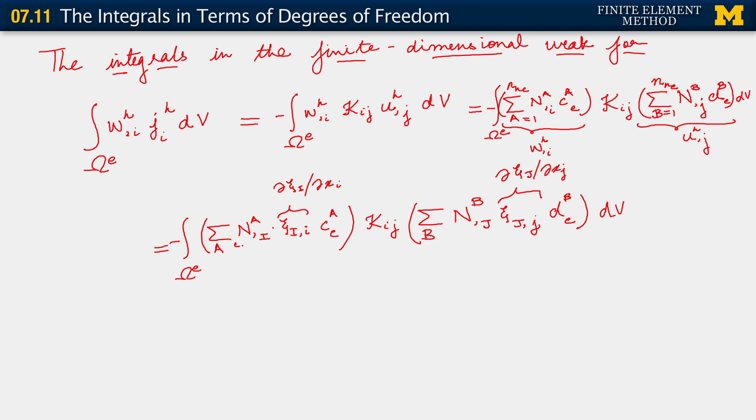And this is partial of n a, the a basis function, the basis function for node a, or the basis function which is 1 at node a, with respect to xi capital I. So we know how to compute these quantities now. Let's make our expression here a little simpler by observing that the degrees of freedom are independent of position and therefore they can be pulled out of the integral. So we take the step that we have taken before in the 1D problem.